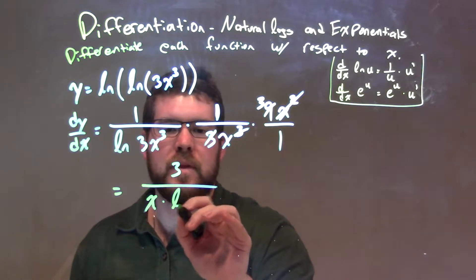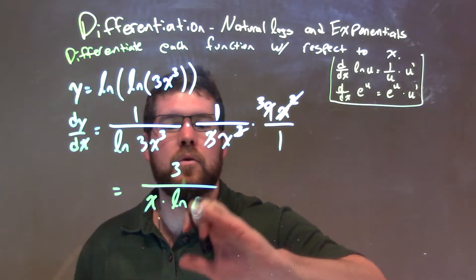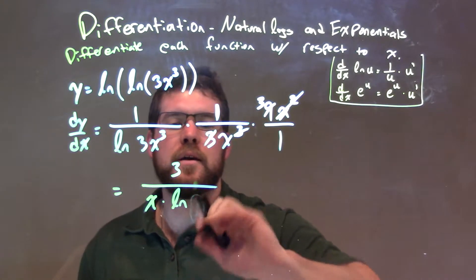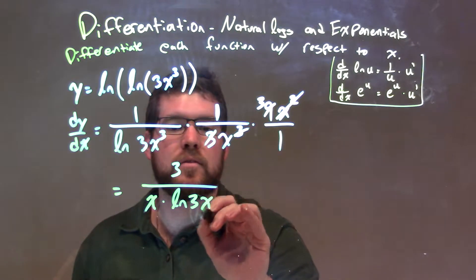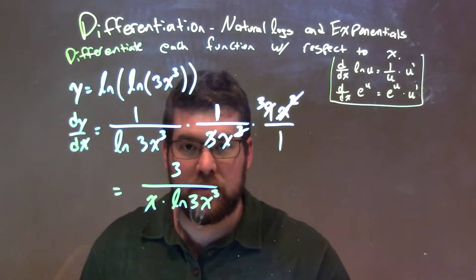x times, and what's left over here, natural log of, let's write the 3 there, which is getting all funky, but, of 3x to the third power. And there we have it, our final answer.